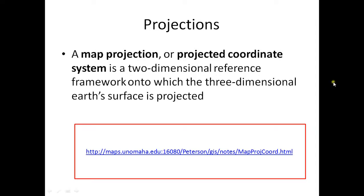A projection, or projected coordinate system, is a two-dimensional reference framework onto which the three-dimensional Earth's surface is projected. First we define the Earth using a geographic coordinate system, then we transform that onto a flat surface — that is called projection.